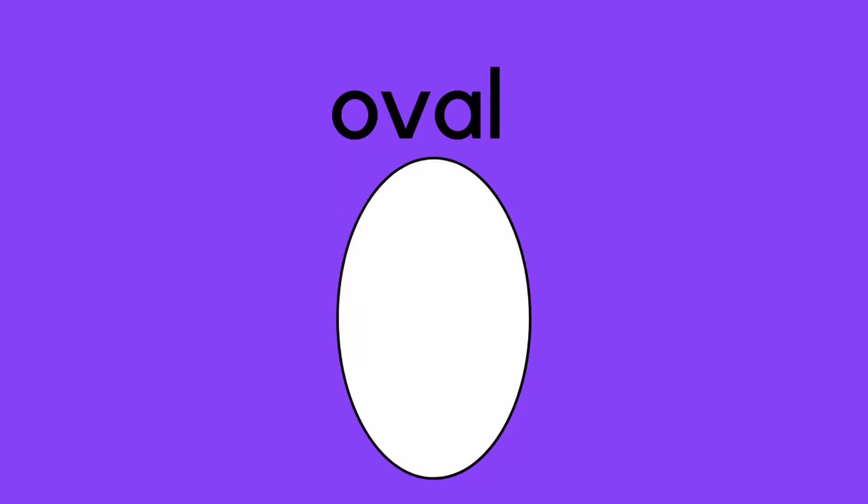Great. Now let's talk about our shape of the day. Our shape of the day today is an oval. An oval is round, sort of like a circle, but not exactly. If you want to think of what an oval looks like, think of an egg. An oval is the shape of an egg.